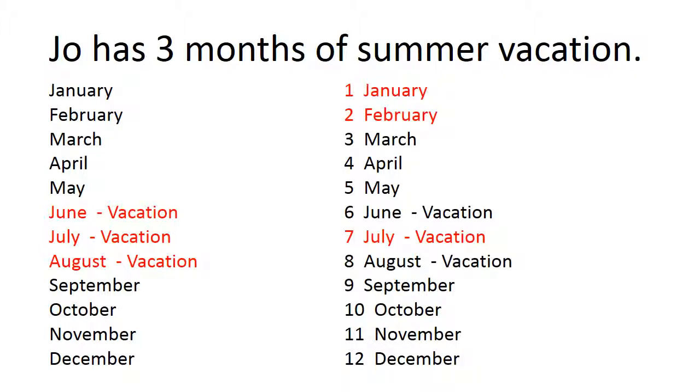Sometimes the months are represented by a number. January is the first month of the year. February is the second month of the year. July is the seventh month of the year.